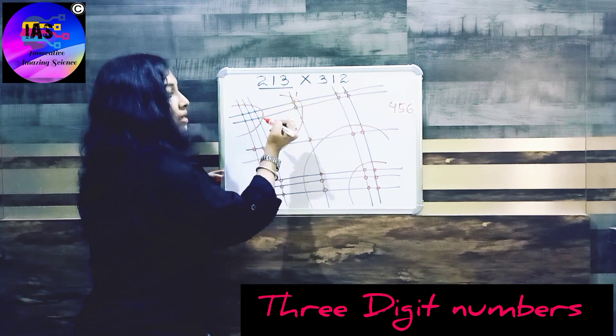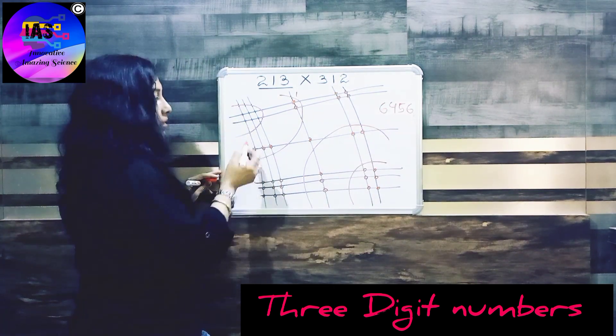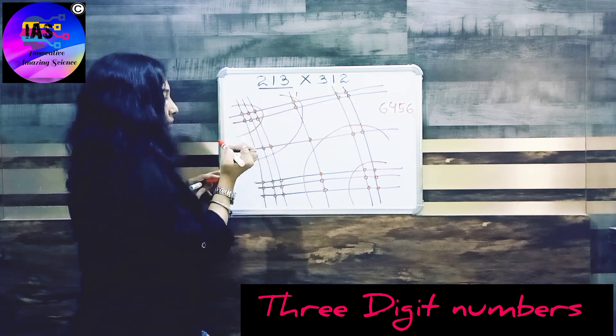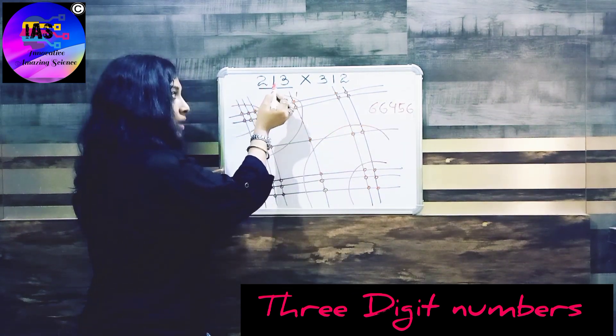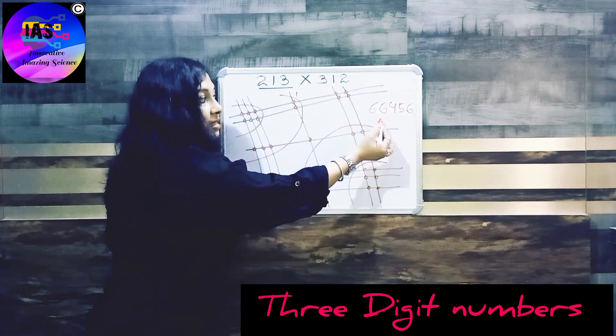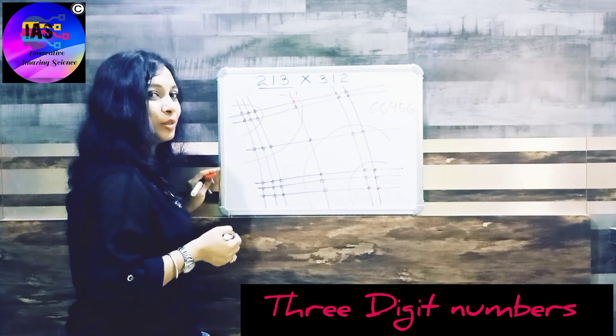And the last point is: one, two, three, four, five, six. So when you multiply 213 into 312, the answer becomes 66456. Don't believe? Check out with the calculator if you want to.